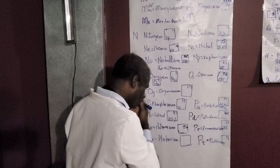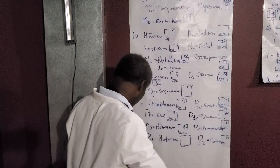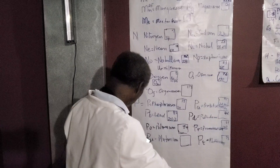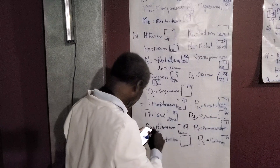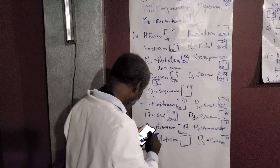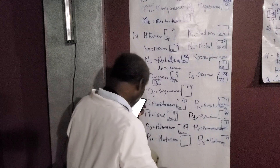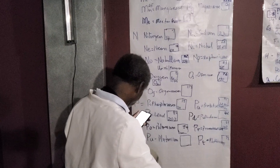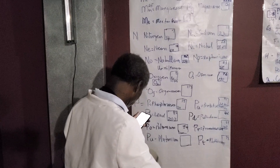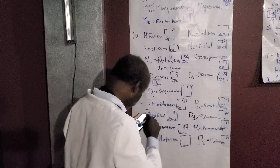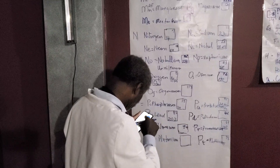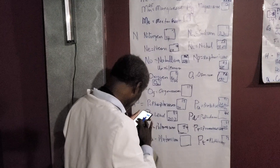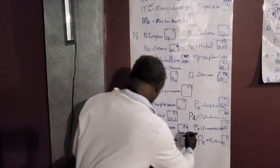We have plutonium — that radioactive element, sister to uranium. The element symbol is PU, atomic number 94, atomic weight 244.